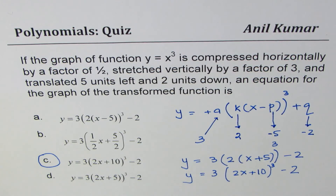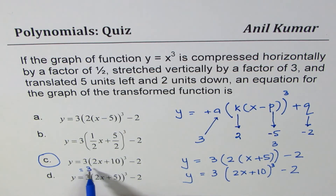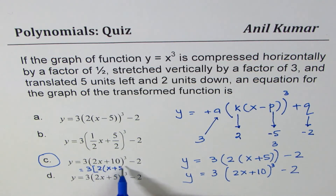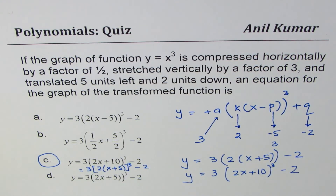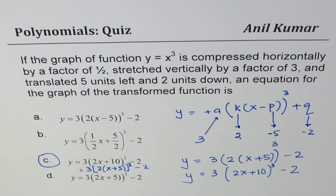C is the right answer. You can factor two from the inside to get 2(x + 5), which gives 3·(2(x+5))³ - 2. So whenever you're describing a horizontal transformation, you need to factor — factor out the k factor from the inside function, and then you'll get the right value for horizontal translations as well.